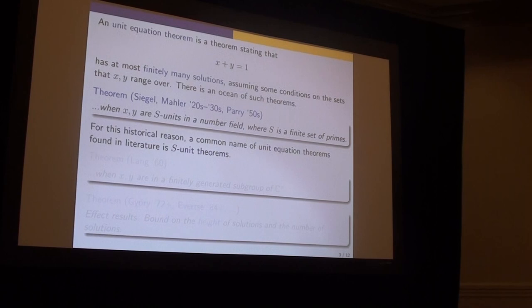But it turns out that the key to S-unit theorem is not really about S-units, it is really about finite generation of unit groups. Dirichlet theorem states that the set of S-units in a number field is finitely generated. A lot of that is the only most important feature we want. In particular, Lang proves a general statement that when x and y are in a finitely generated subgroup of the multiplicative group of complex numbers, then you have finitely many solutions as well.